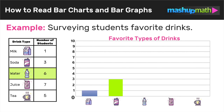Our next bar is for water. Based on the chart, six students chose water as their favorite drink, so we make a bar that goes from zero to six over the water icon — this bar represents the six students who chose water. Next, for juice, seven students chose juice as their favorite drink, so we create a bar over the juice icon that goes from zero to seven.